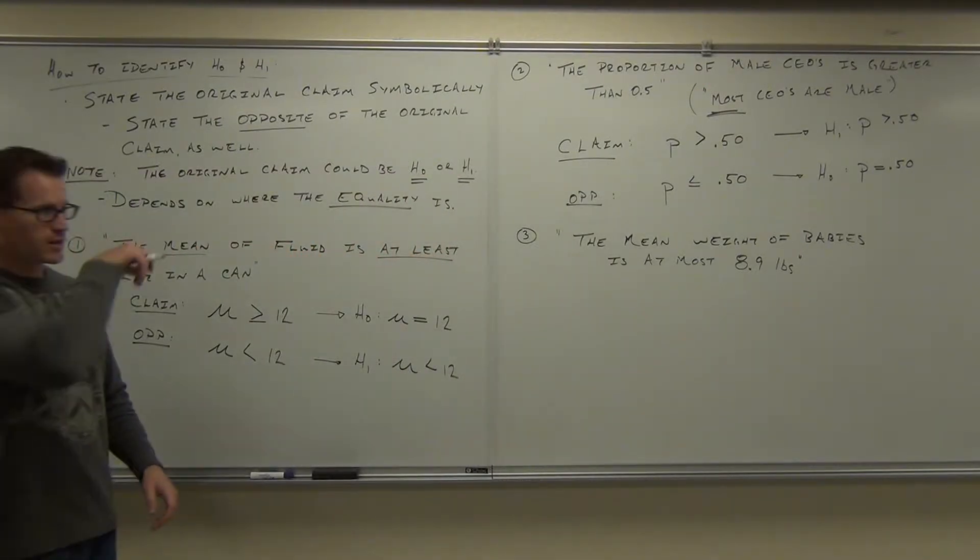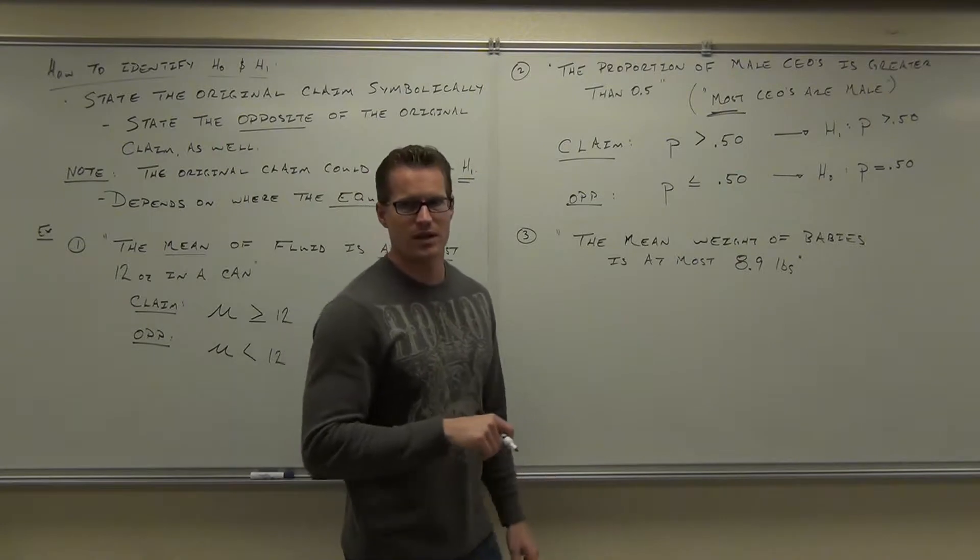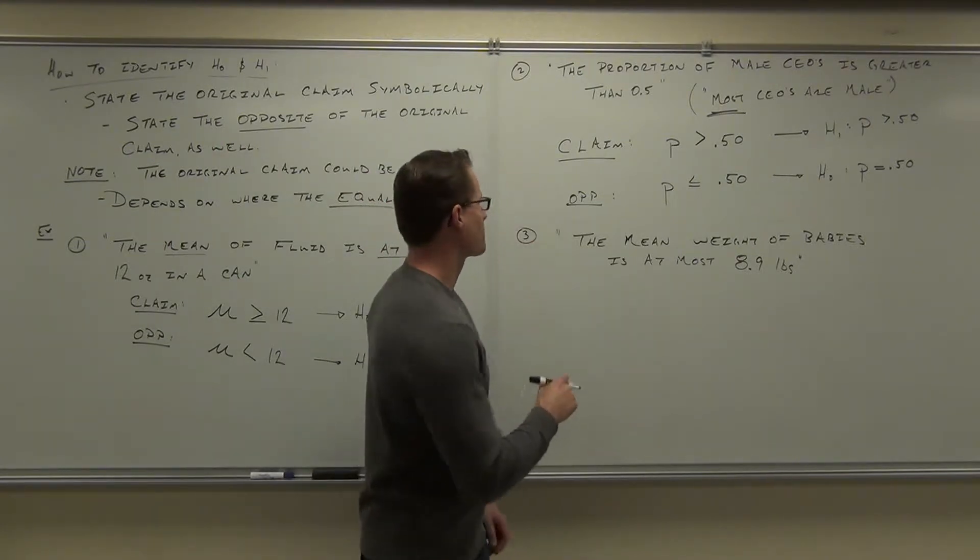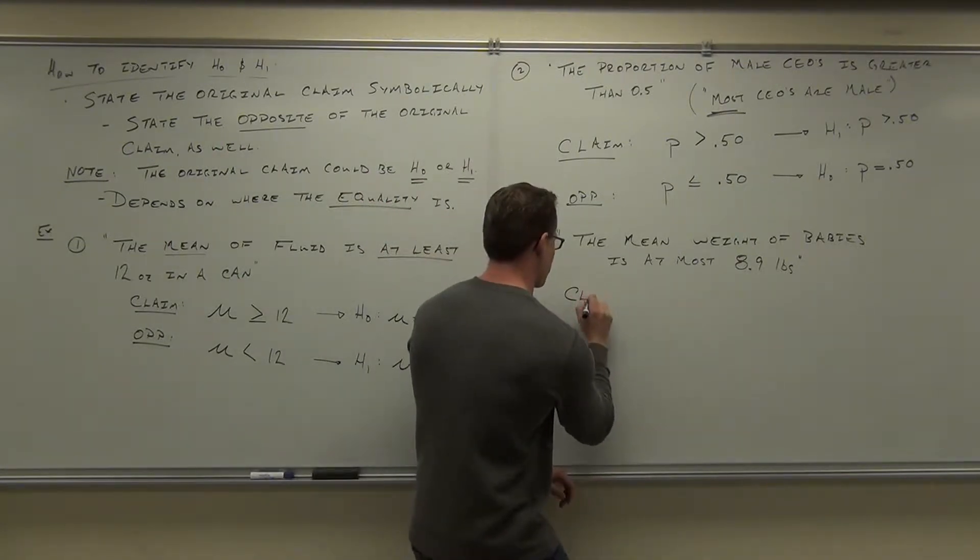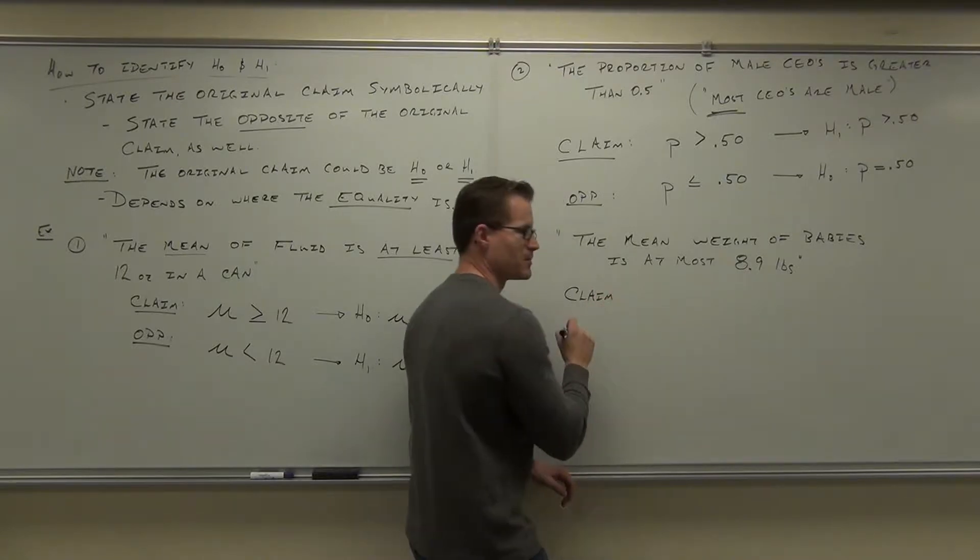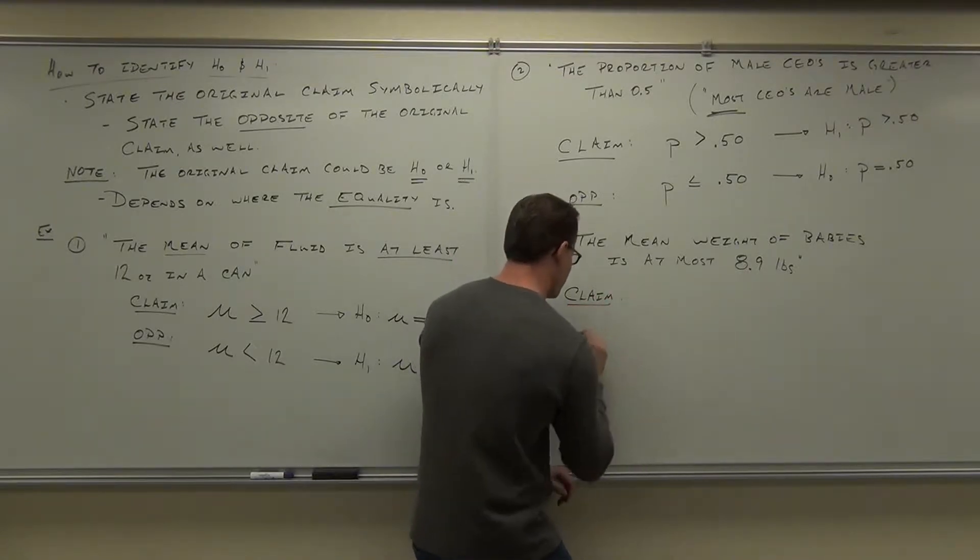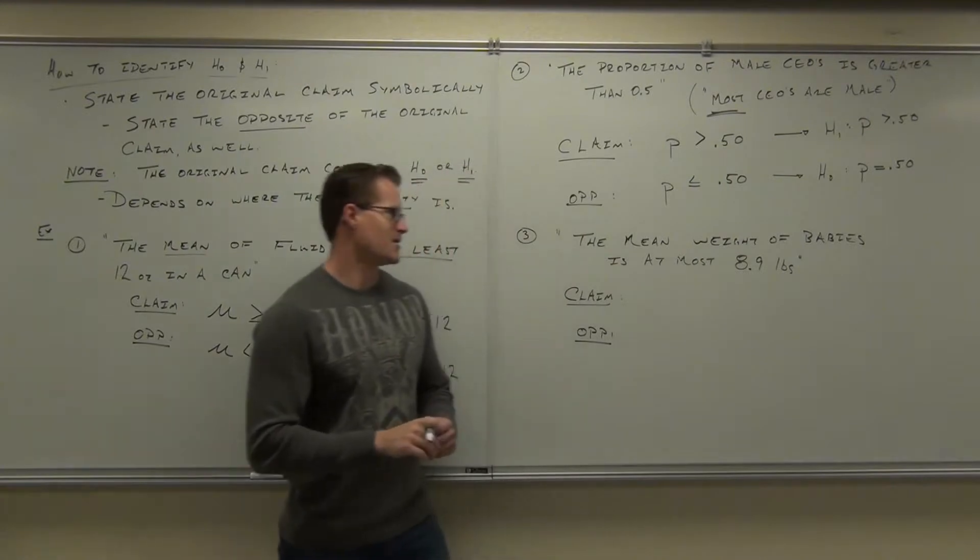The mean weight of babies is 8.9 pounds. I have no idea if that's true. I think I just made it up. That's a pretty big baby. Smaller than my turkey. My turkey was worth like three babies.